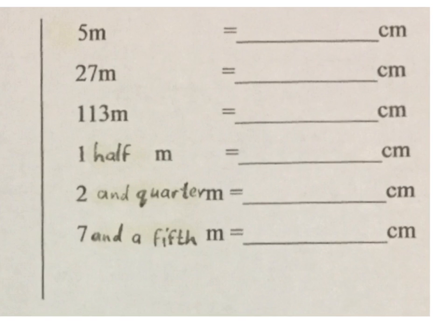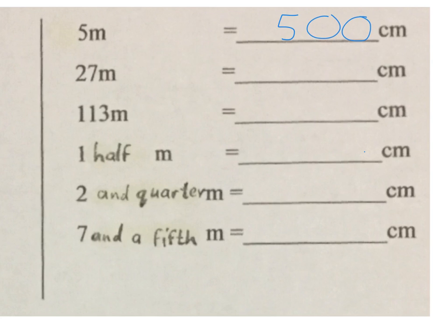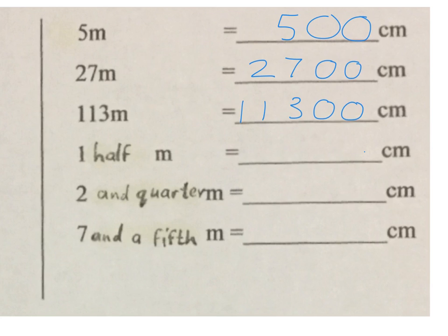Now we're going to do conversions from meters to centimeters. You must know that there are 100 centimeters for every meter — please remember that. So if I have 5 meters I'll have 500 centimeters. For 27 meters, for every meter I have 100 centimeters, so I just put two zeros at the back. This one is even more — still just putting two zeros at the back. For every meter we have 100 centimeters, and that gives 11,300.